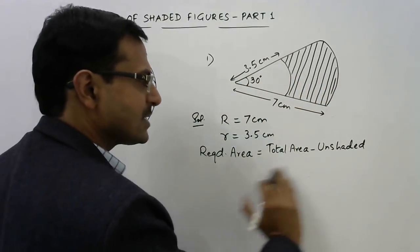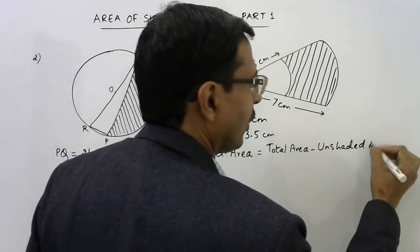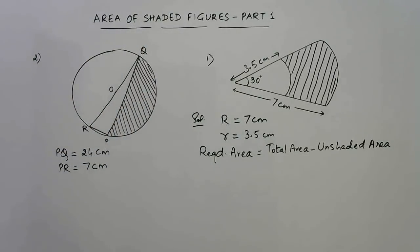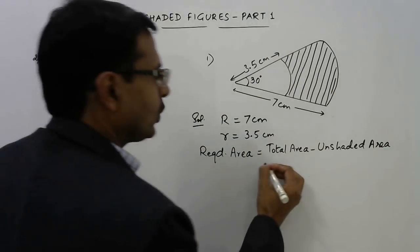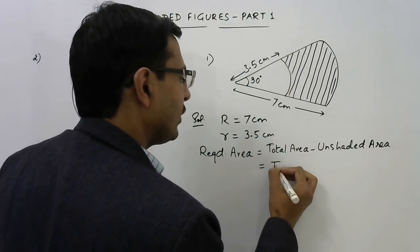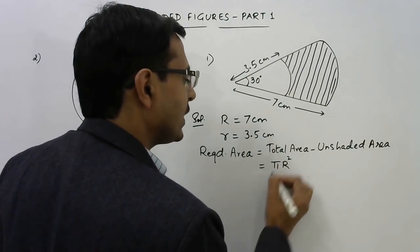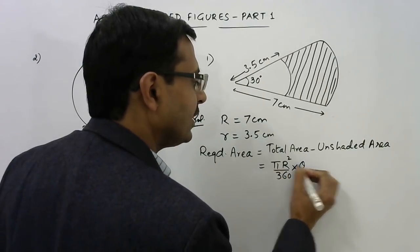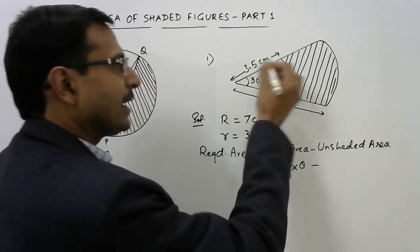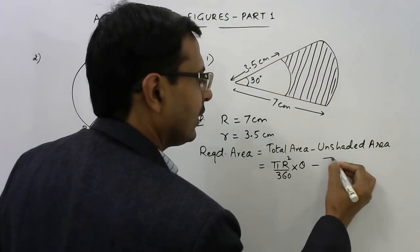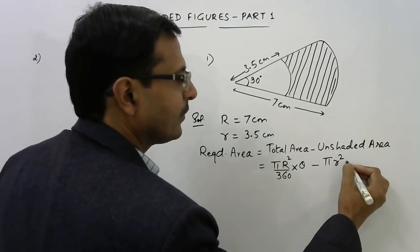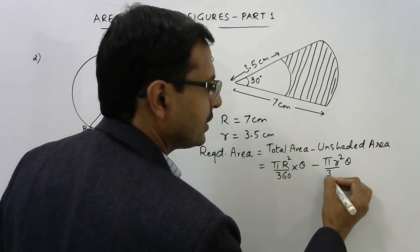The shaded portion is not a particular figure, so we are making use of this method of finding the shaded area. Required area will be equal to total area minus unshaded area. Total area is the area of sector, that is πR²θ/360, and unshaded area is also a sector, so I will use the same formula but with different radius, that is πr²θ/360.